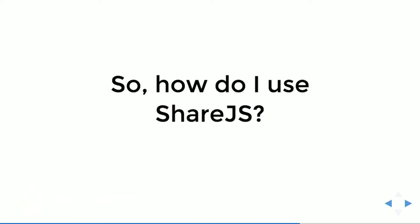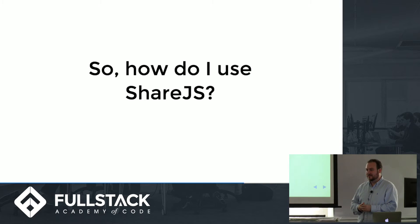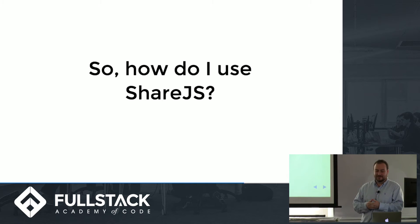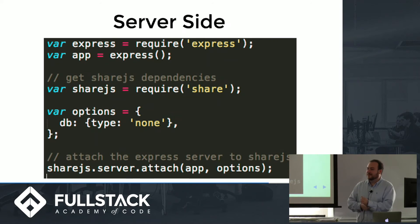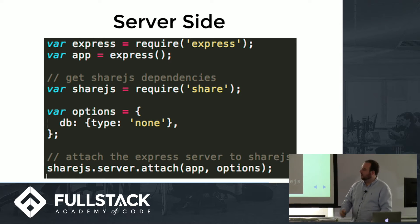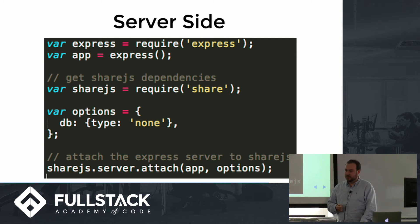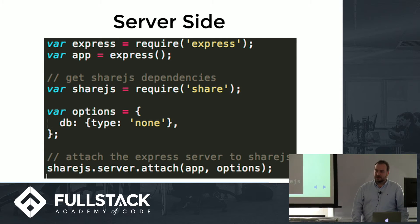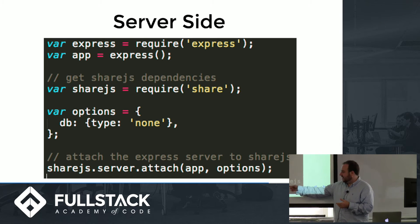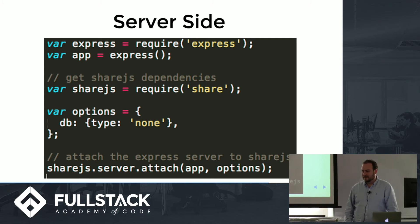This brings up the question of how do we use ShareJS. The whole point is to make it simple, and it's pretty simple. For the server side, if you're using an Express app, you define your Express app, require the ShareJS library (which is an NPM install), and you can include database or authentication options. The database most commonly used is Redis, but I've also seen people using Mongoose — that makes all the changes persistent. You really just attach the app with the options to the ShareJS server, and that's all you have to do for the base case on the server side.